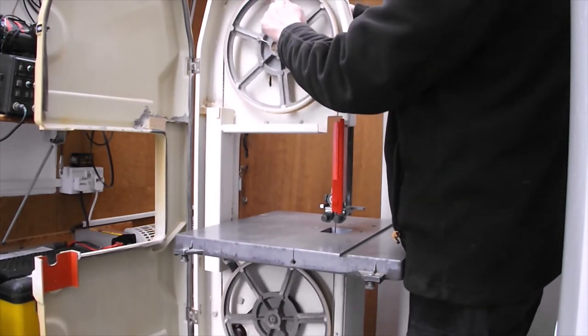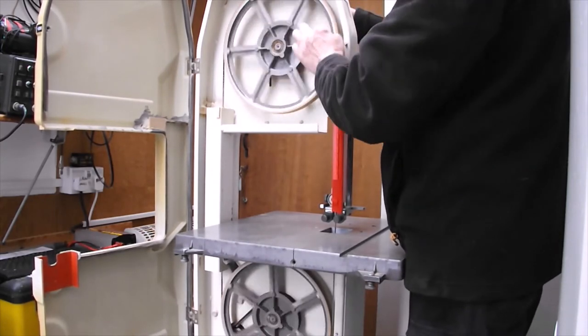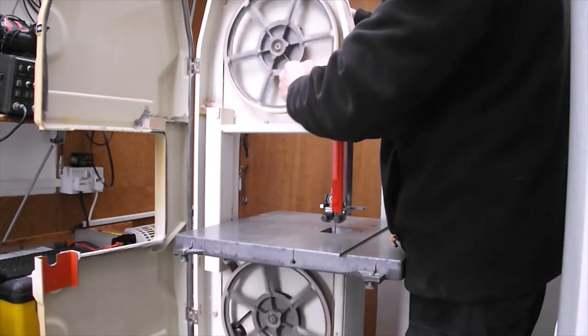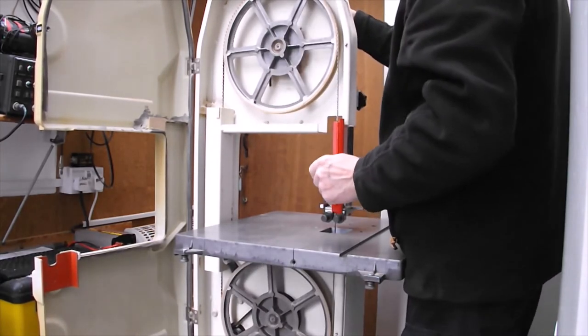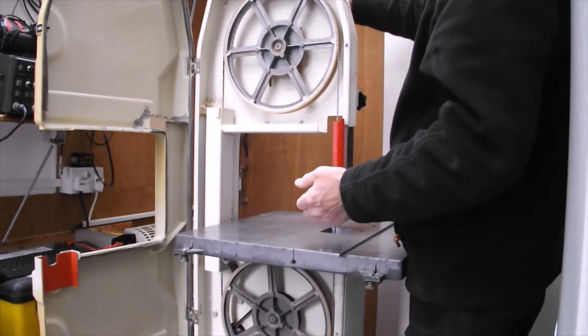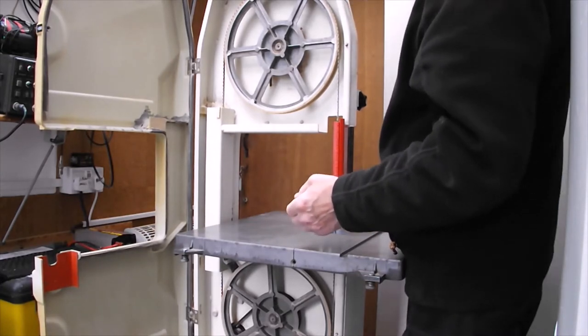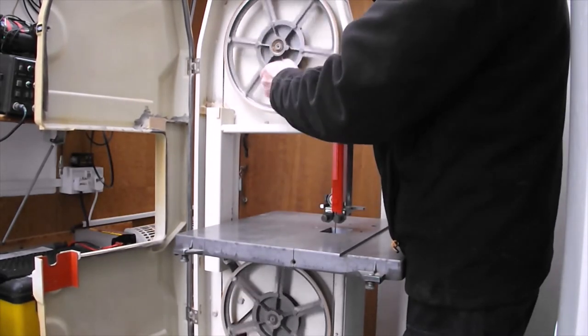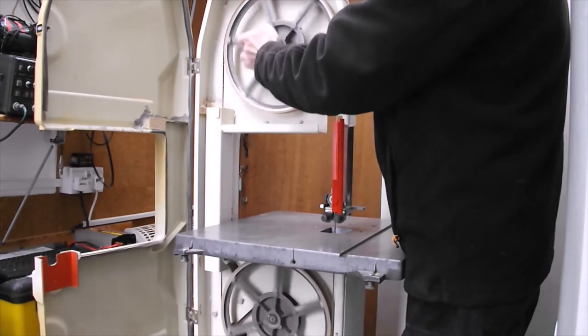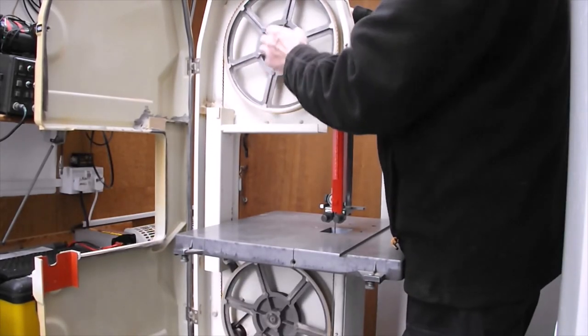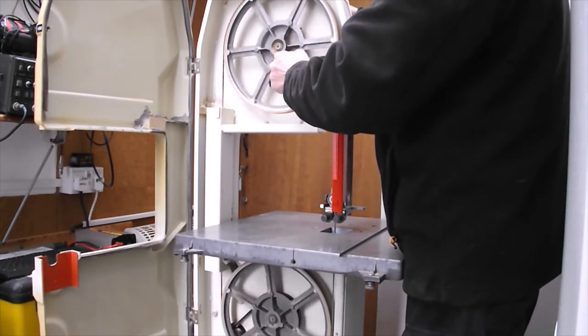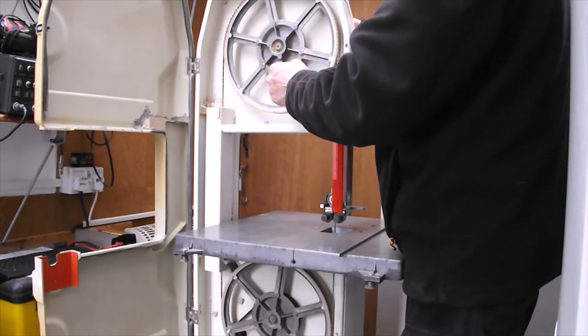So it's just over the edge of the two wheels using the adjuster at the back. Just going to put more tension in there. Actually, it's going to stay where we want it. Have to be a bit careful because it's a very narrow blade.